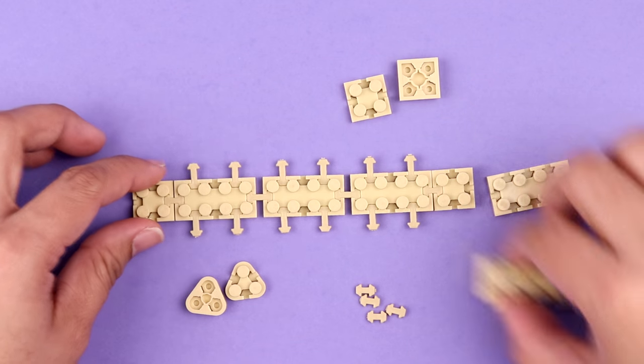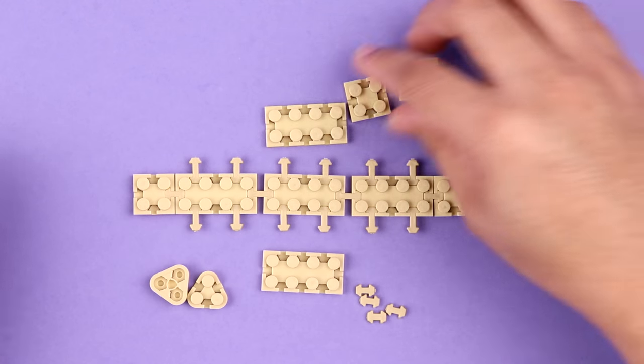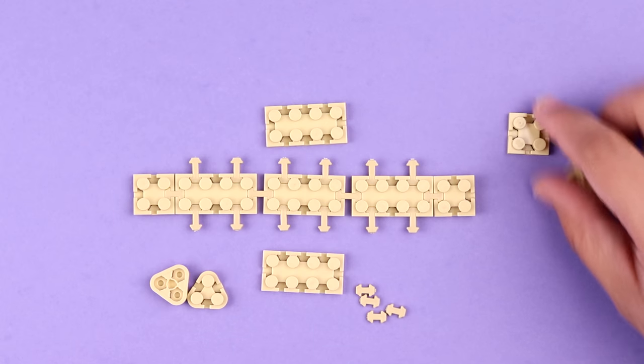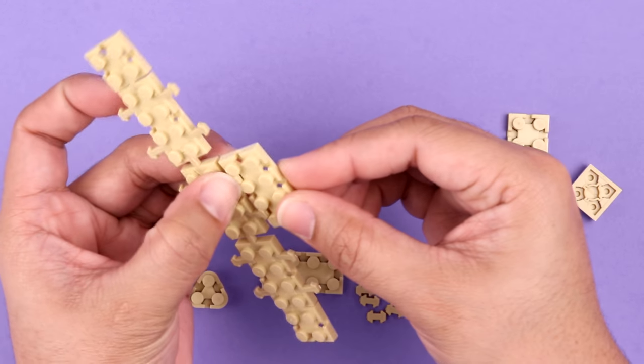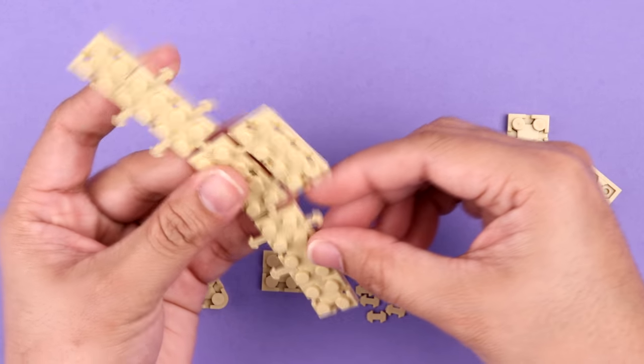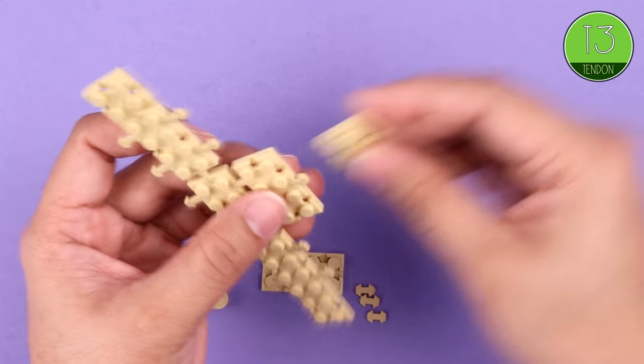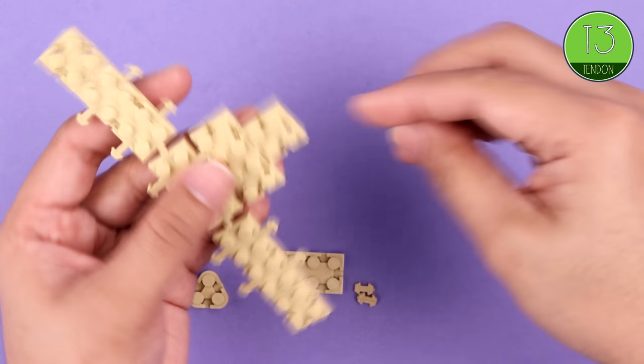Lay your bricks out beforehand, that makes things a lot easier. So we'll add a rectangle, a square and a triangle, connected with T3s, to each side of our rectangle strands that we made.